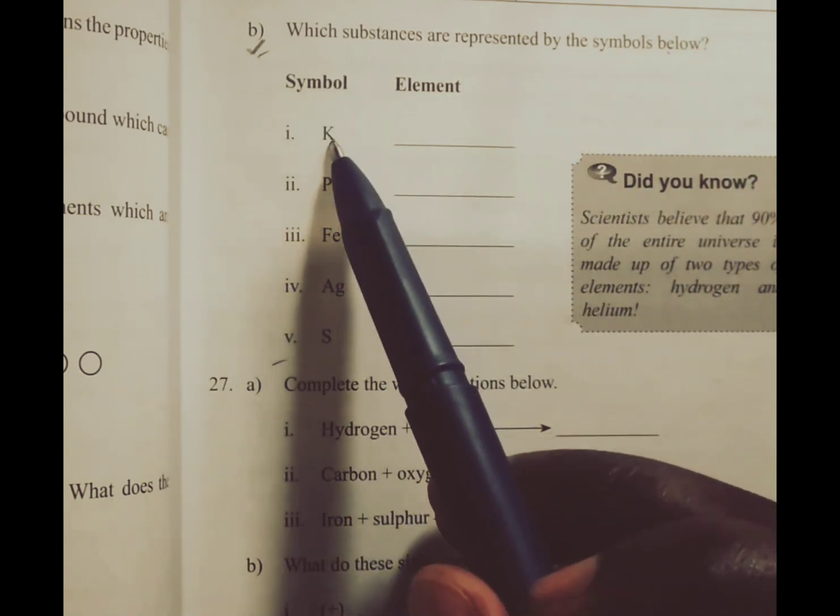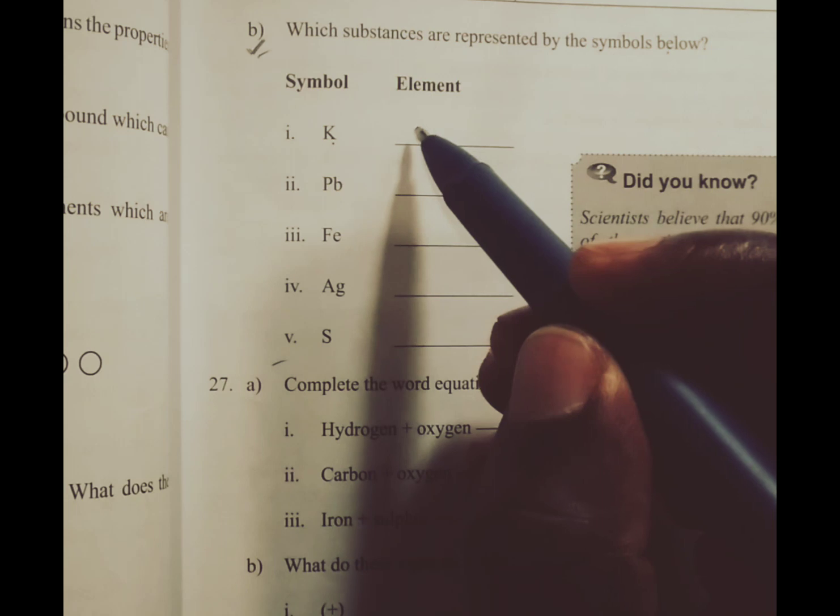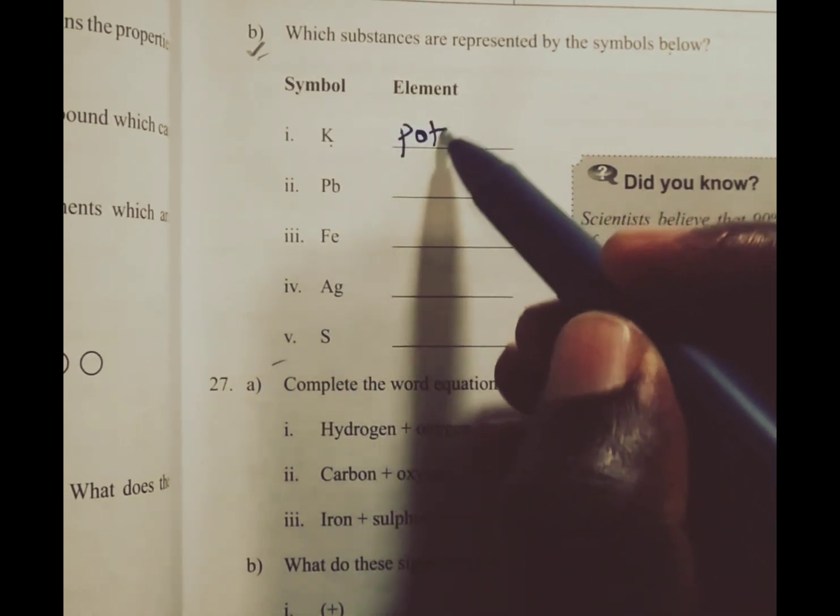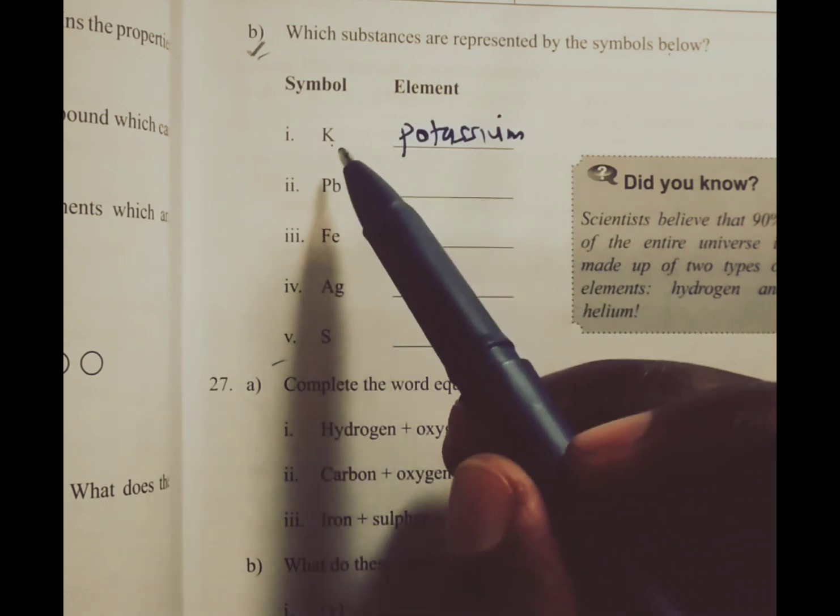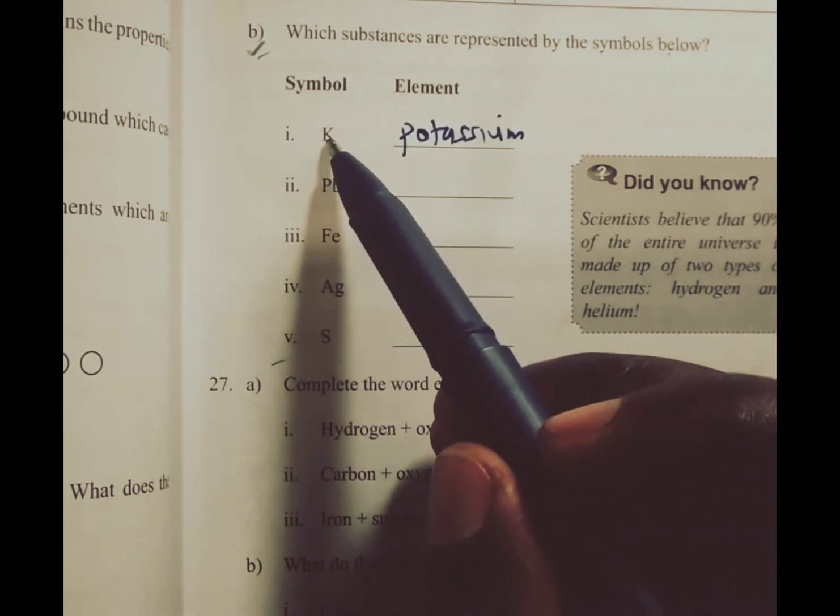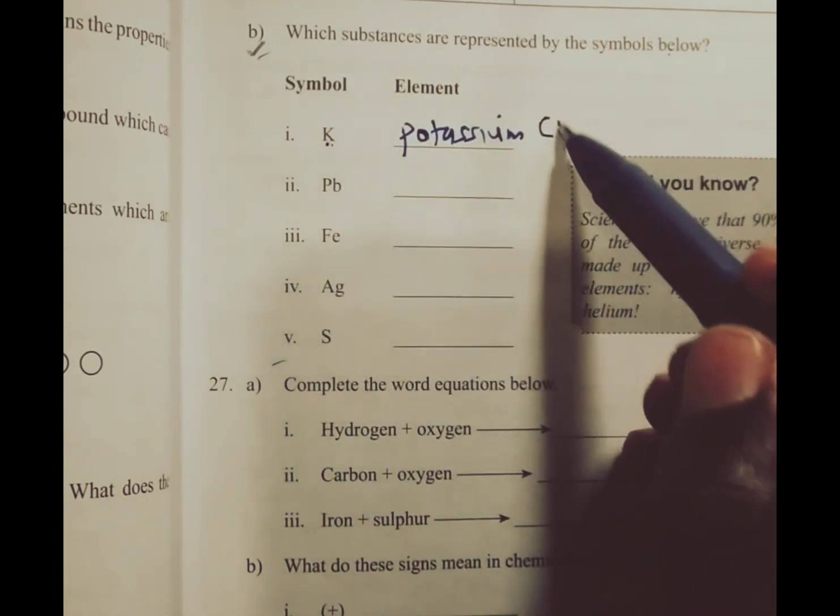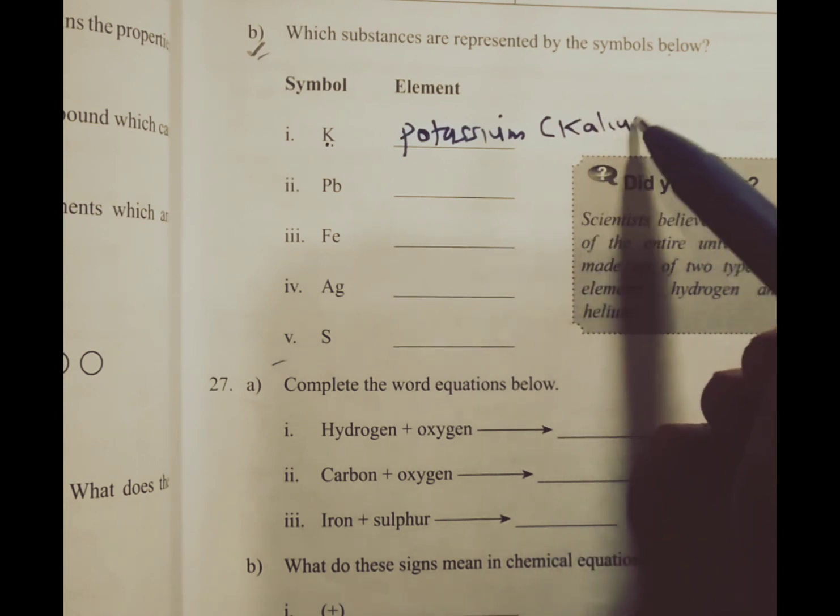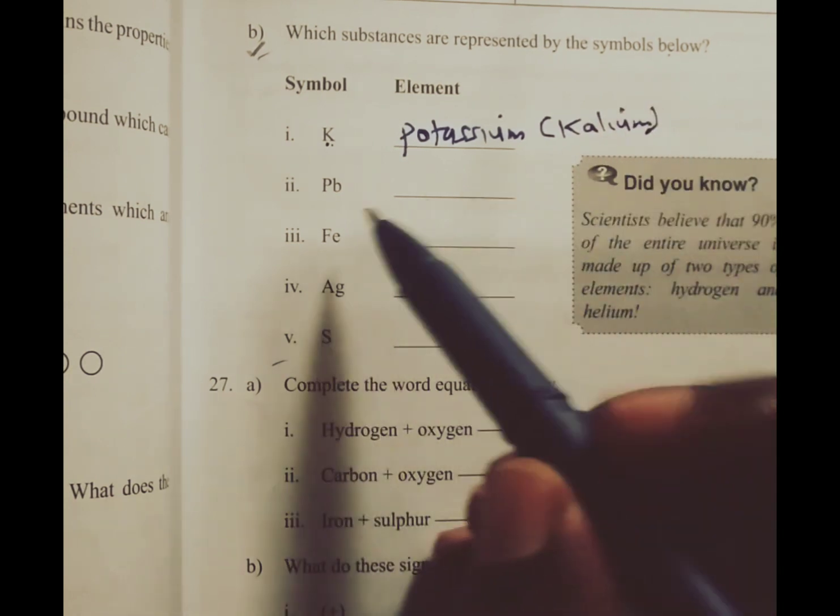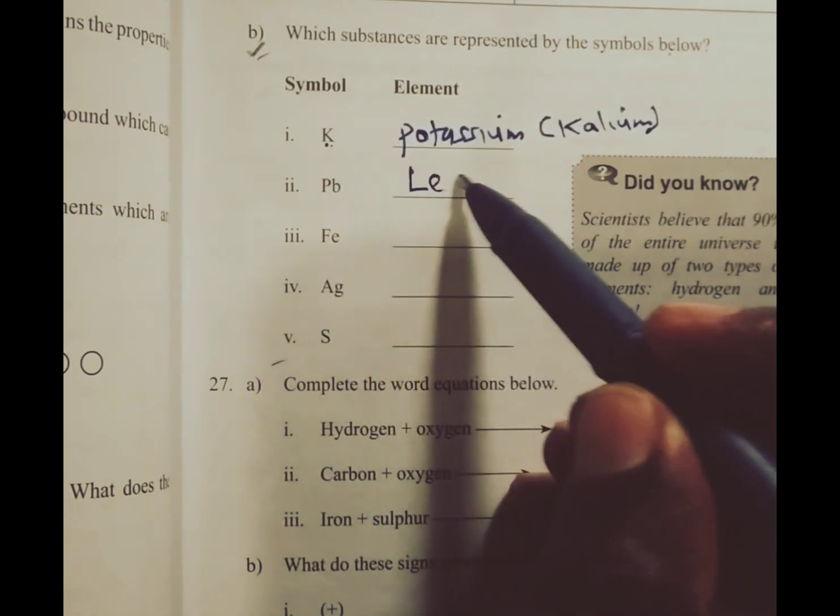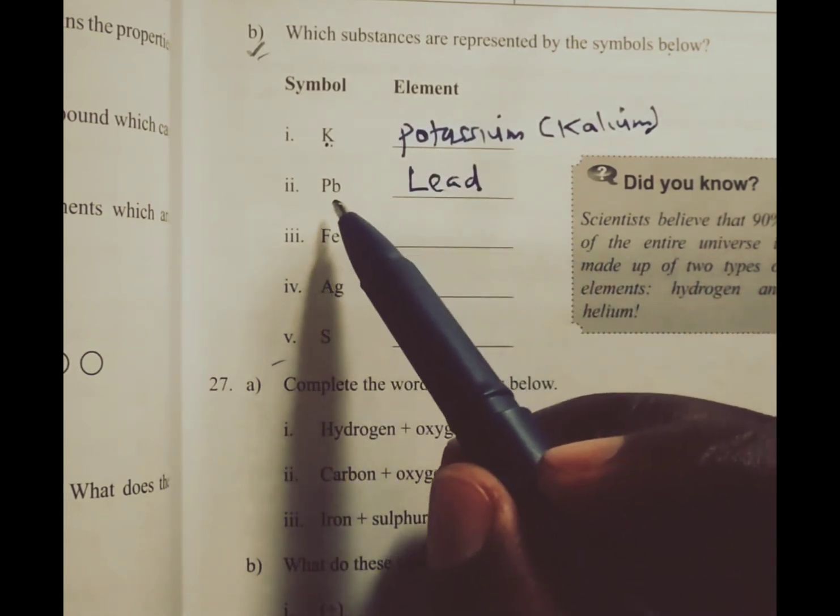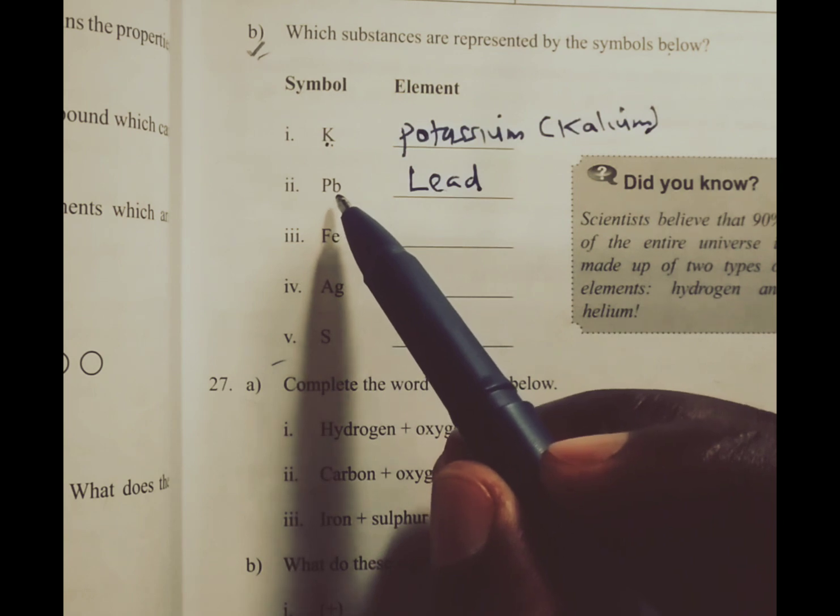We have symbol K which stands for potassium, and remember K is obtained from the Latin name for potassium which is kalium. We have Pb which stands for lead, and this chemical symbol is derived from the Latin name for lead which is plumbum.